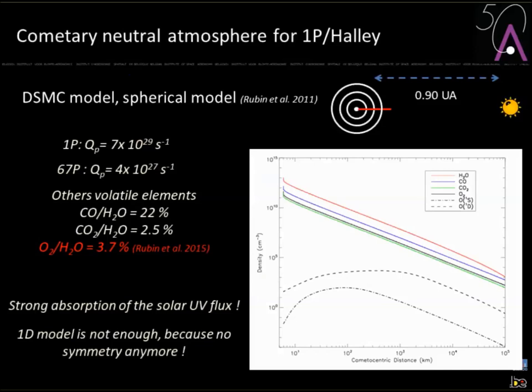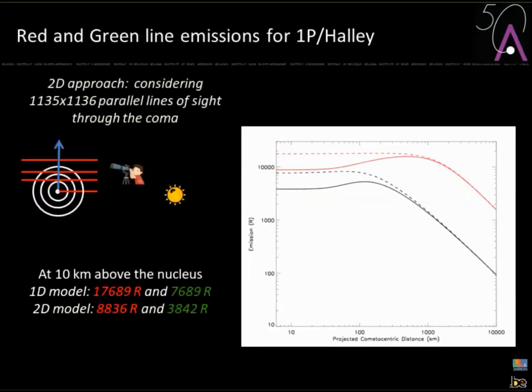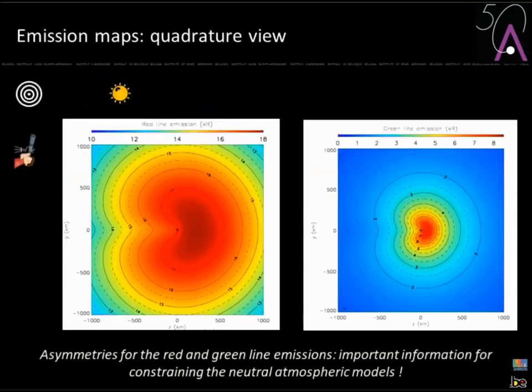The same analysis can be done for Halley's comet, where O2 has also recently been detected. However, for Halley, the activity is so high that you cannot assume the solar UV flux is constant through the atmosphere — you must account for absorption. The 1D model used for 67P is insufficient; a 2D model is needed. Without UV absorption, you would overestimate the emission by a factor of two at just 10 km above the nucleus.